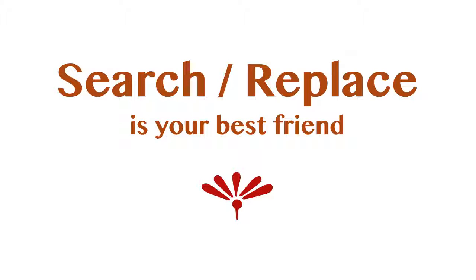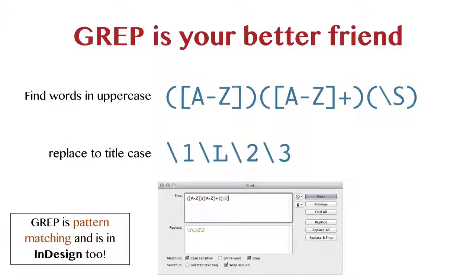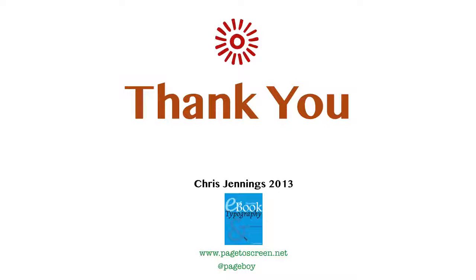Search and replace is your best friend. GREP is a way of pattern matching within your text — you can use an external editor like BBEdit to, for example, find words typed fully in capitals and replace them with title case. You can also do that within InDesign. Thank you very much — that's the end of this presentation.